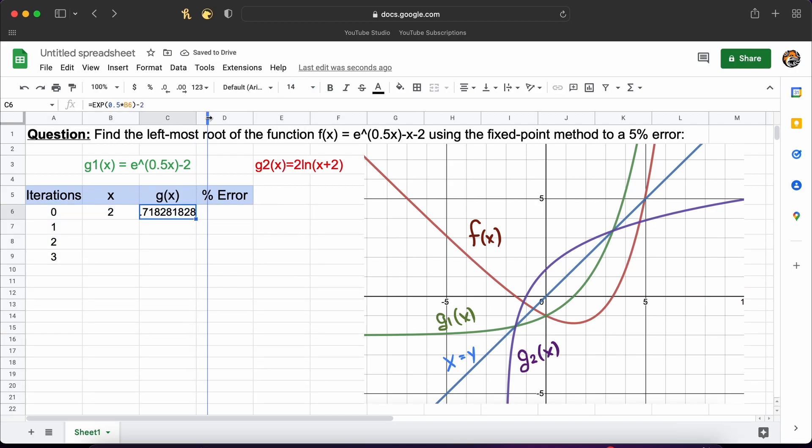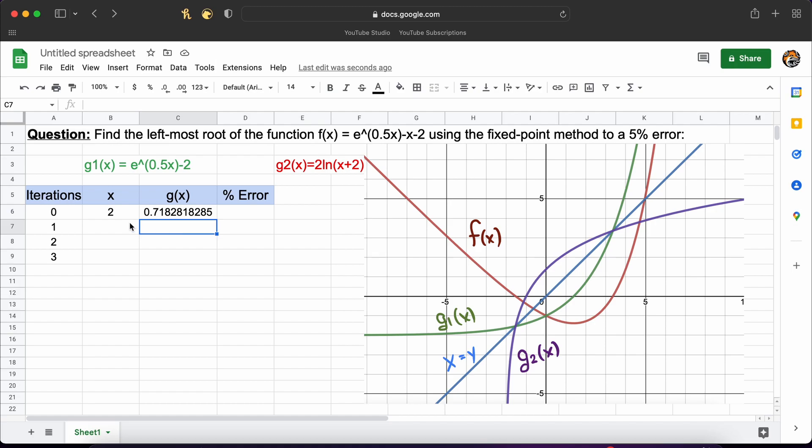Let's just go ahead and highlight this and drag it down to iterate our solution. Now we just need to set our input x value as our output from the first iteration. We can do that by setting this cell equal to the previous output value like so.